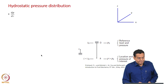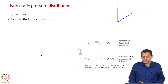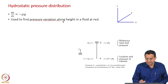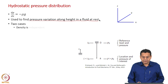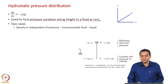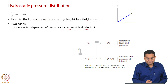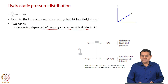That starting equation will be used to find pressure variation along height — specifically, pressure variation along height in a fluid at rest. Two cases: the first case is pressure distribution in water, a liquid which is an incompressible fluid, meaning density is independent of pressure. That is the simpler and very practical case.